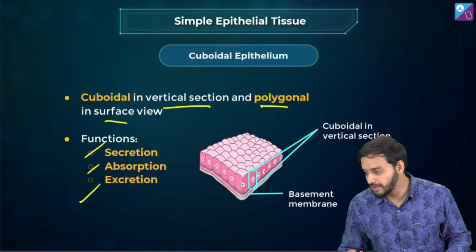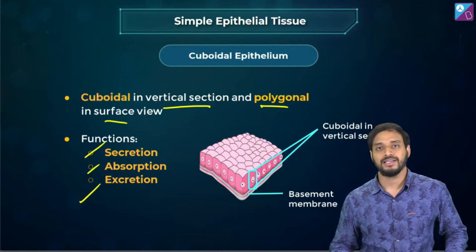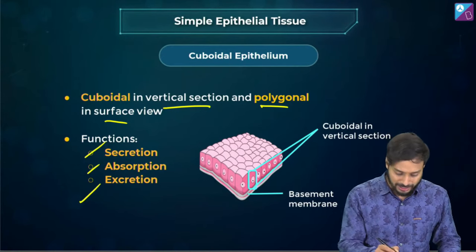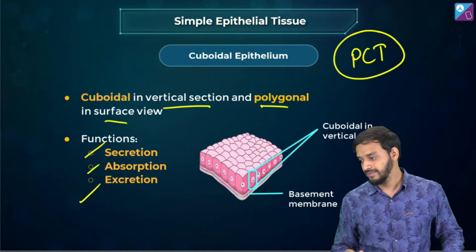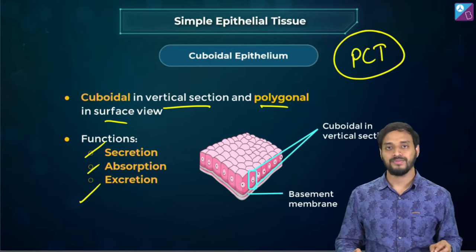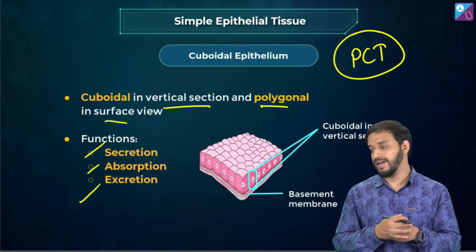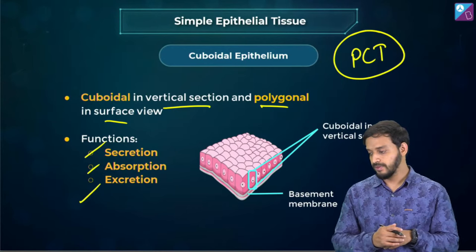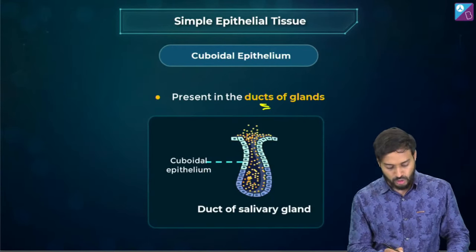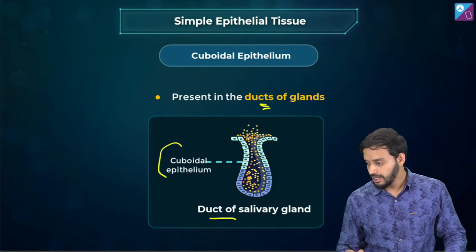Do you remember PCT — proximal convoluted tubule? It has brush borders due to presence of microvilli. These cuboidal epithelial cells of PCT have microvilli that help in increasing the surface area for enhanced reabsorption. Cuboidal epithelium is also found in the ducts of the salivary glands for secretion, and in the thyroid follicles. The cavity of the follicle is filled with a homogenous gelatinous material called colloid.